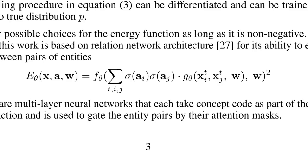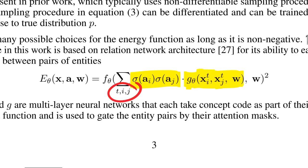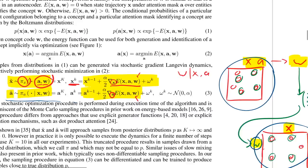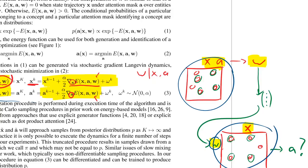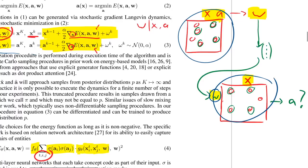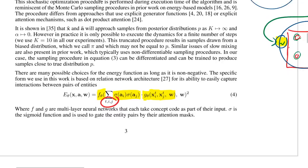To do all this, their energy function is a relational neural network. You have a simple multi-layer perceptron that always connects two entities to each other along with the concept vector. A sigmoid connects the attention masks of the two entities, and you sum over all pairs of entries in your model, then pass through another MLP. The key point is that you can feed the full situation — x, a, and w — into a neural network, and it outputs a number indicating how well those three things fit together.